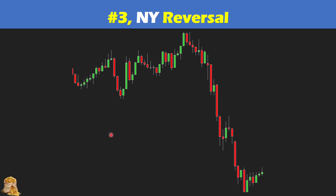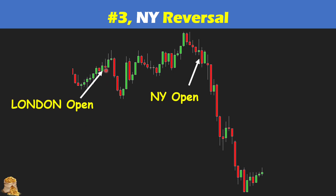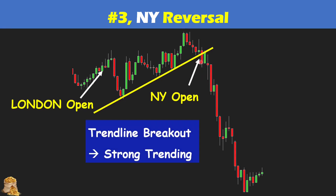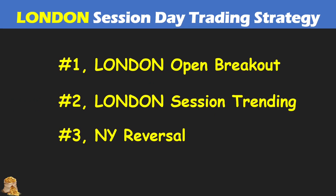Now let's look at the third type of reversal pattern. We have the London open and New York open, and in between we can draw a trend line — the market is going up, following the trend line. But in the New York session, the market breaks the trend line to the downside. The trend line break is very strong due to the bear bars, and the market changes direction from uptrend to downtrend — the downtrend is very strong with good trading opportunities. To summarize, there are three types of trading strategies for the London session: London open breakout, London session trending, and New York reversal.